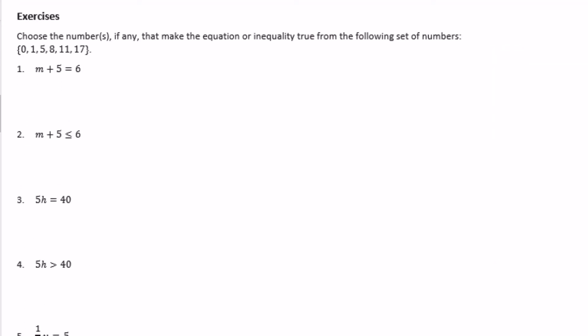Exercises: choose the numbers that make the inequality true from the set 0, 1, 5, 8, 11, and 17. Exercise 1: m plus 5 equals 6. Solving: m plus 5 minus 5 equals 6 minus 5, so m equals 1. The only value that makes this true is 1, and we do have a 1 in our set, so the answer is 1.